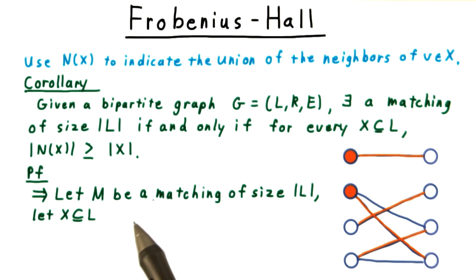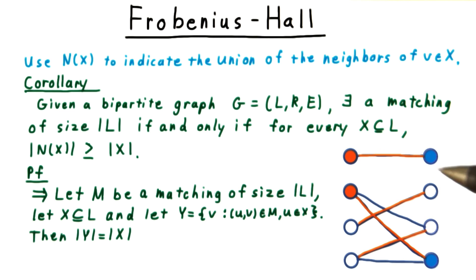The forward direction is the simpler one. We'll let M be a matching of size |L| and let x be a subset of the left-hand side. We let y be the vertices on the right-hand side that x got matched to.